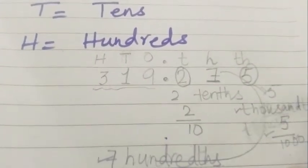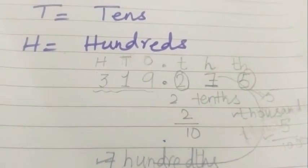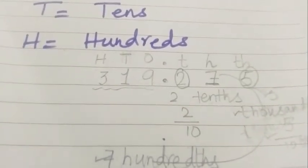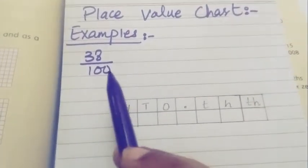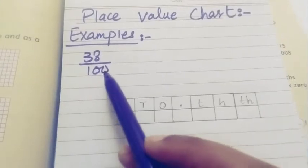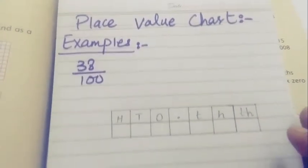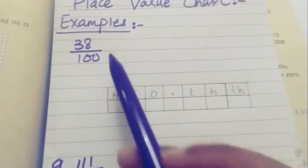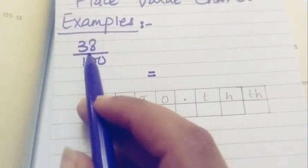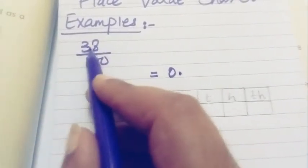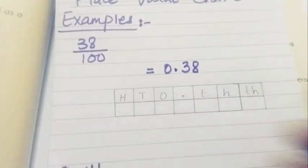Now let's do some examples where we have to place numbers in the place value chart. We have 38/100. If you have a question as a fraction, first change it to a decimal. 38/100 — the denominator 100 has two zeros, so we move two decimal places: this gives us 0.38.